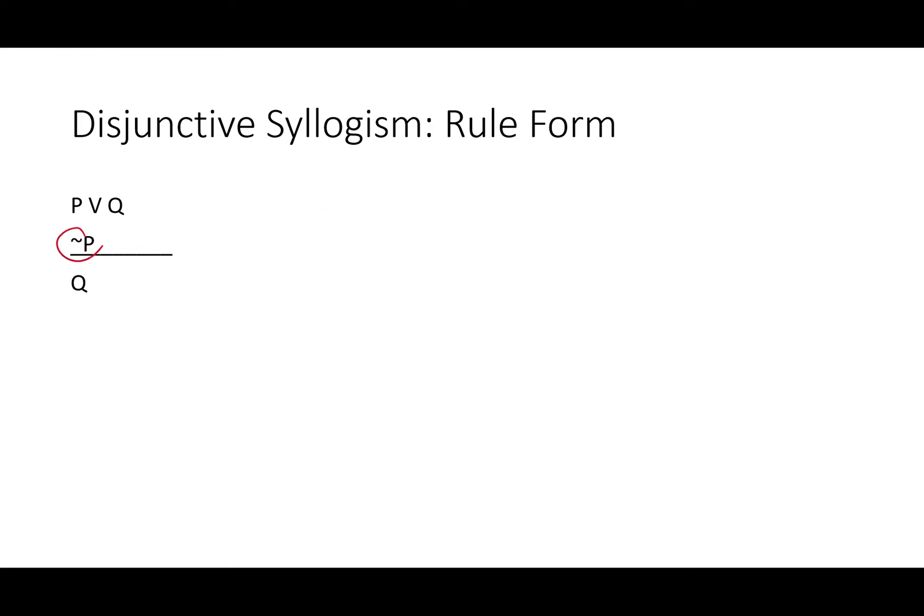Disjunctive syllogism is the rule of having a choice between two things and having one of those choices blocked off. Either this or that, well not this one, so that one. Let's put in A and B for P and Q. That'll give us an output of either A or B, not A, so B.